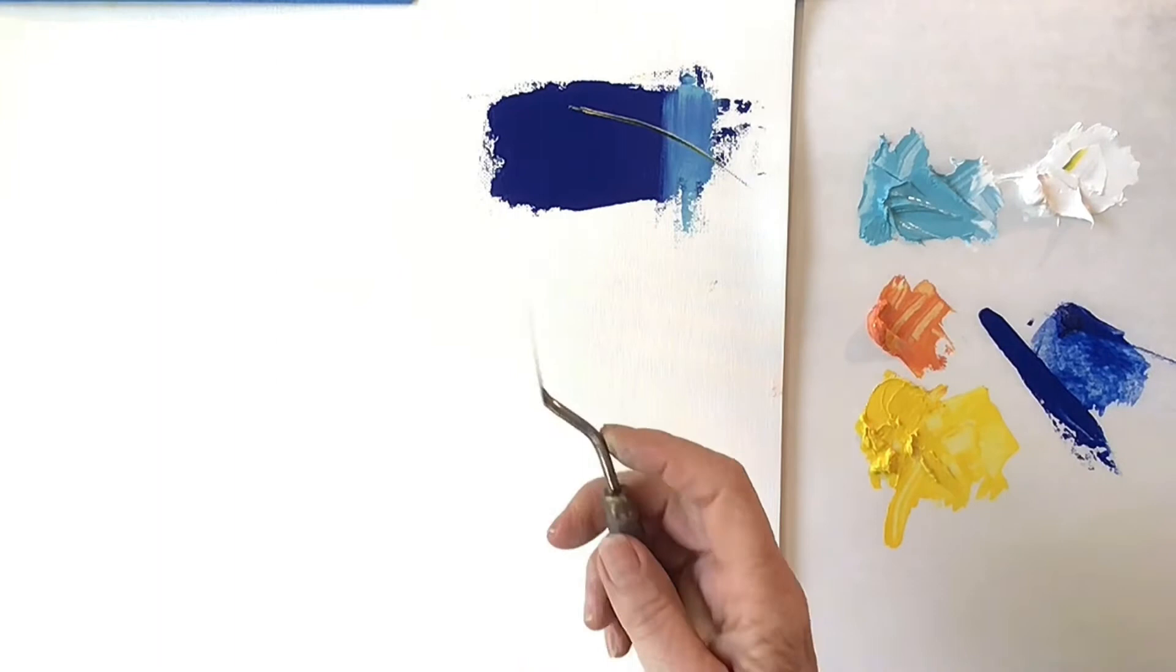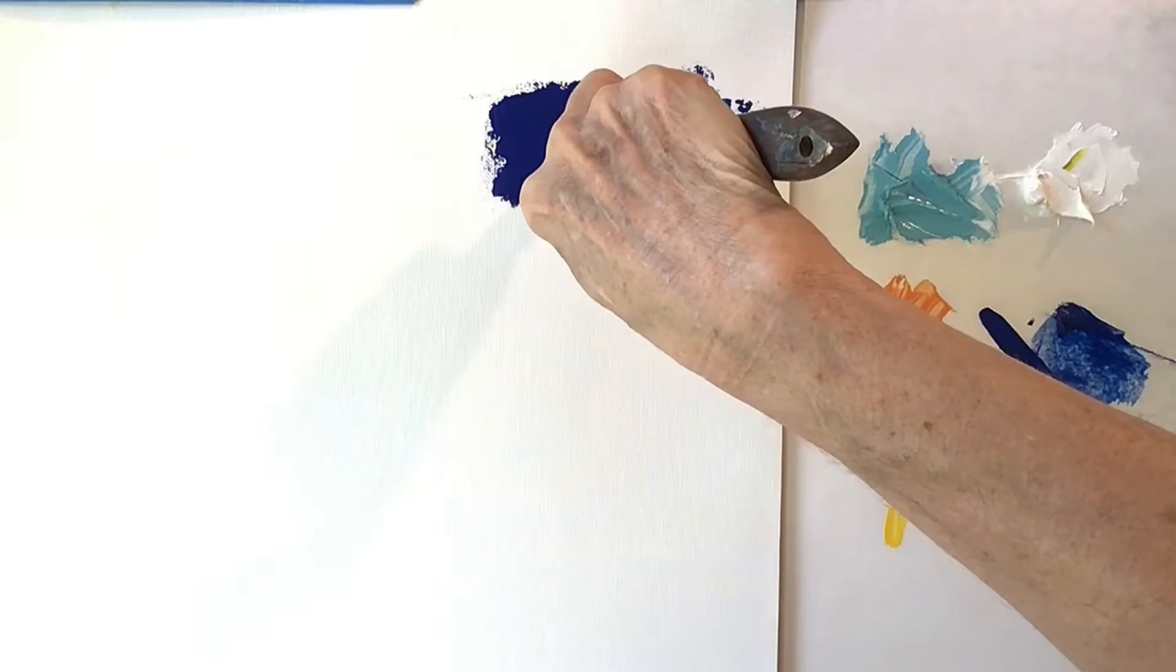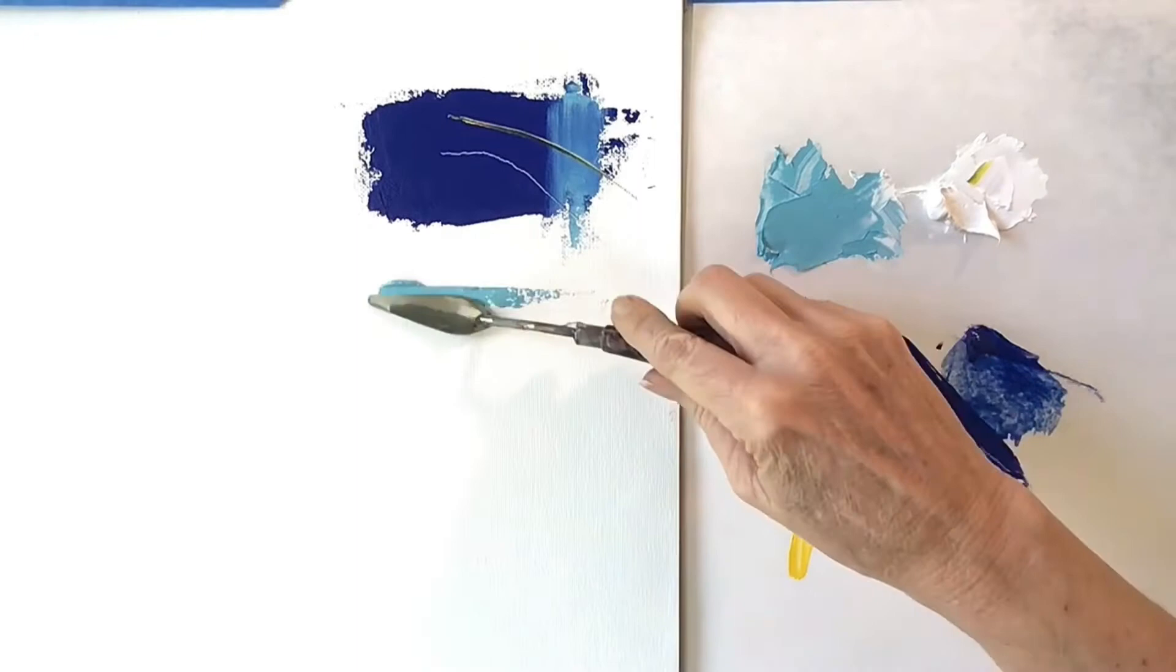To scratch into the paint, you want to grip the tip with your forefinger like that and bring the tip through the paint with a firm but light touch.